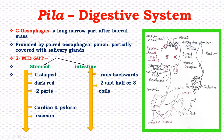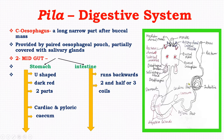The intestine arises from the pyloric end of the stomach, runs backwards, and turns upwards and backwards in the visceral mass. It forms two and a half to three coils between the gonad in front and the digestive gland below, before joining the cecum.